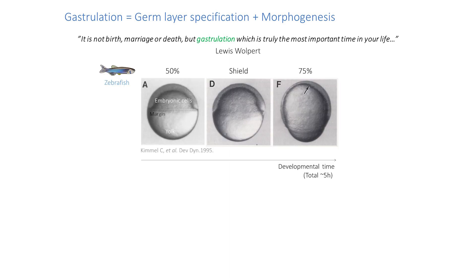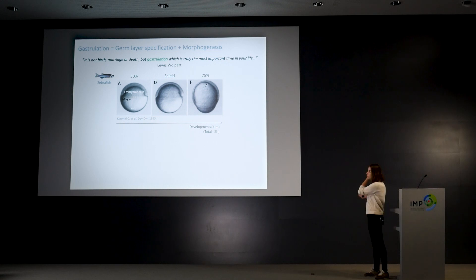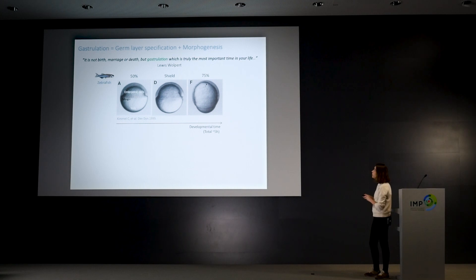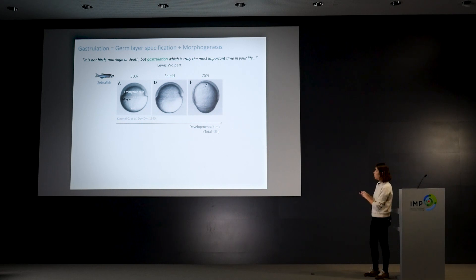In zebrafish, gastrulation starts at what we call 50 percent epiboly, when embryonic cells have covered around half of the very big yolk cell. As time goes by and gastrulation proceeds, the embryonic cells cover more and more of this yolk cell until it's completely enveloped by embryonic cells.